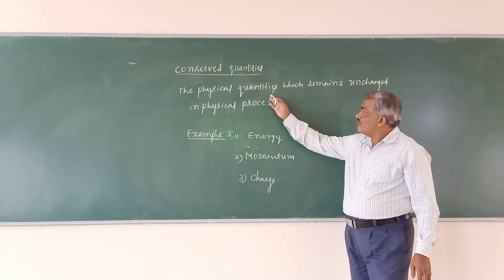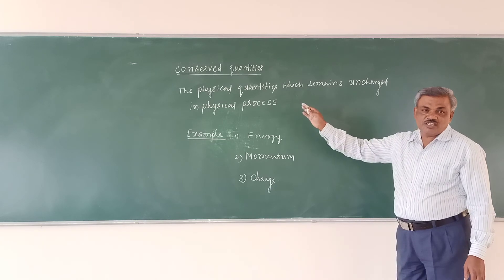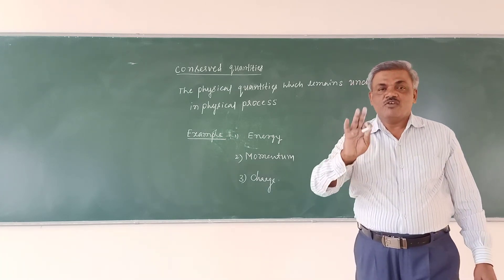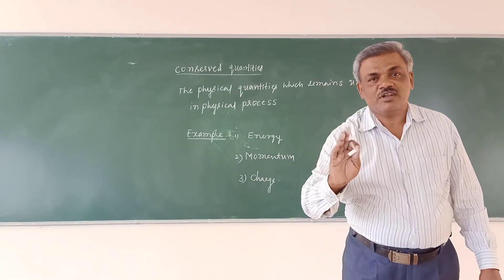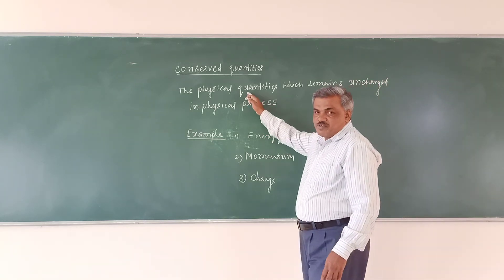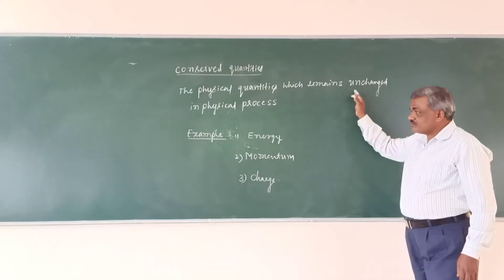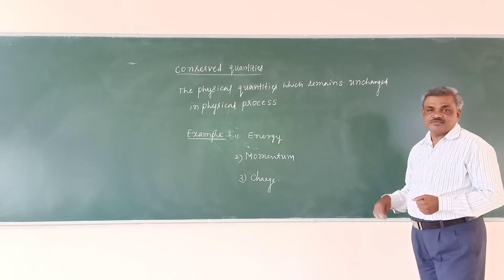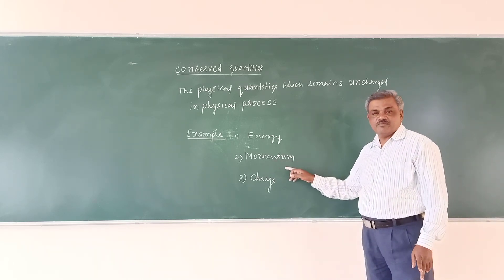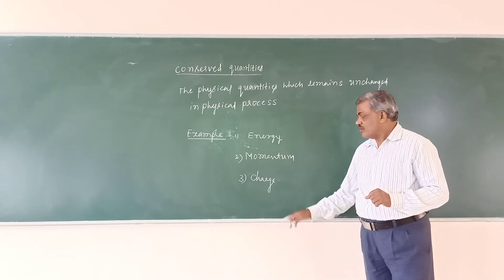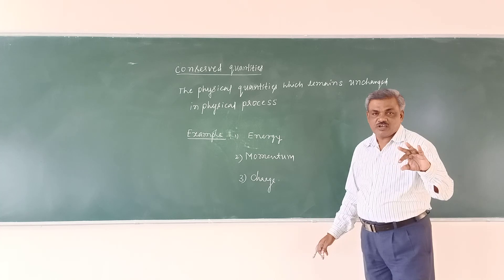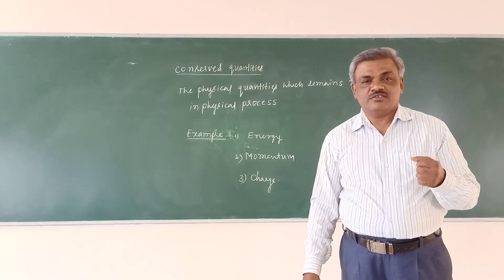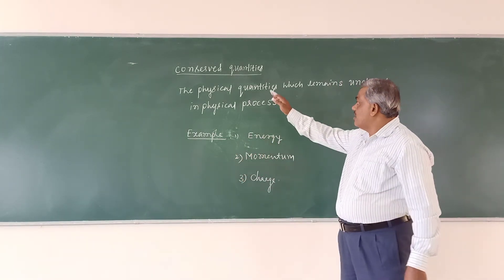The physical quantities which remain unchanged in a physical process are called conserved quantities. In your examination: what are conserved quantities? The physical quantities which remain unchanged in a physical process. Examples: energy, momentum, and charge. Law of conservation of momentum and law of conservation of charge — the total charge of an isolated system remains constant. Three important examples of conserved quantities are energy, momentum, and charge.